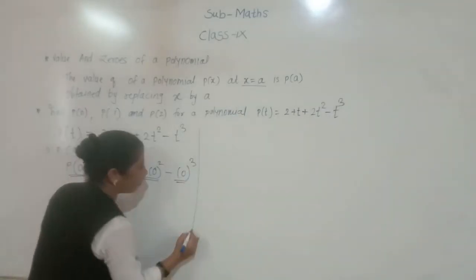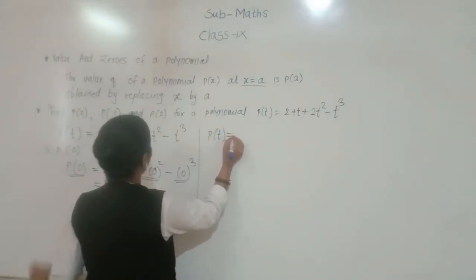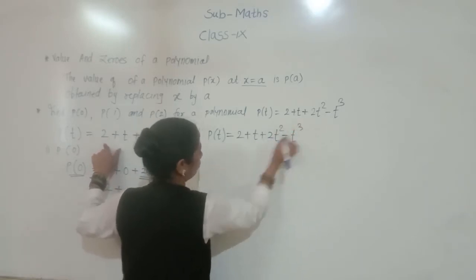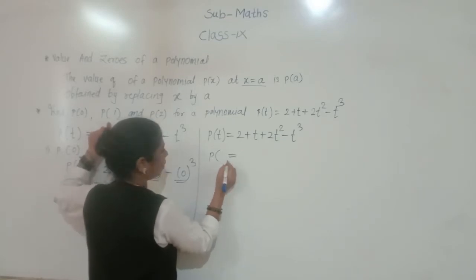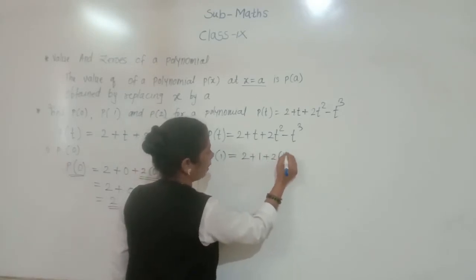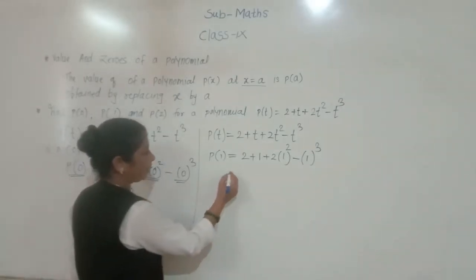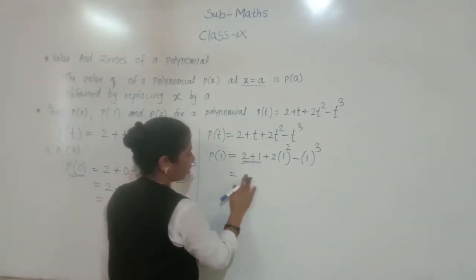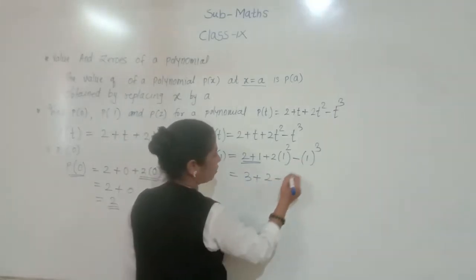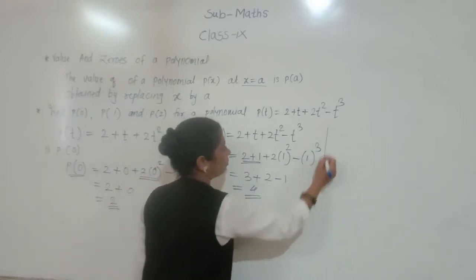Now we find the value at P of 1. The polynomial is P of T equals to 2 plus T plus 2T squared minus T cubed. With T equals to 1: P of 1 equals to 2 plus 1 plus 2 into 1 squared minus 1 cubed. That is 3 plus 2 into 1 minus 1. So 3 plus 2 minus 1 equals 4. The value of the given polynomial at P of 1 is 4.